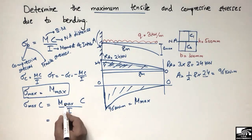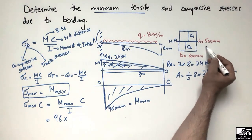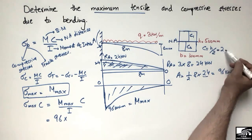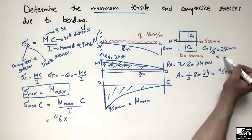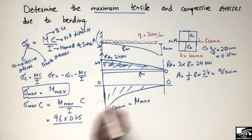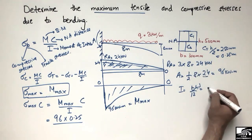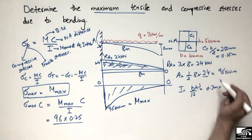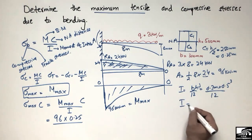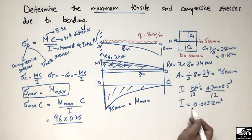Putting in the maximum bending moment of 96 kN·m and multiplying by c, where c = h/2 = 500/2 = 250 mm = 0.25 m. The moment of inertia for this rectangular beam is I = bh³/12 = 0.3 × (0.5)³ / 12, which gives I = 0.003125 m⁴.